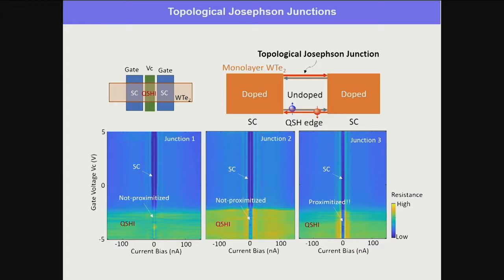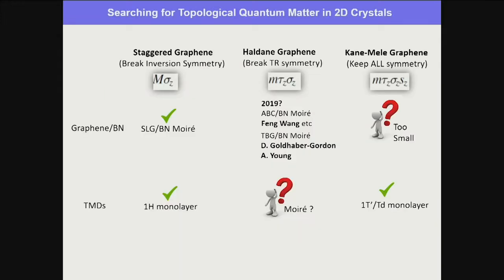This is very good evidence that we can realize a superconducting helical edge mode, a key step toward Majorana zero modes. Summary: we've discussed Berry curvature engineering and three different gap-opening mechanisms for Dirac fermions — staggered graphene, Haldane graphene, and Kane-Mele graphene — and many efforts to realize them. We experimentally demonstrated monolayer tungsten ditelluride as a quantum spin Hall insulator and discovered superconductivity in the same material upon electron doping.